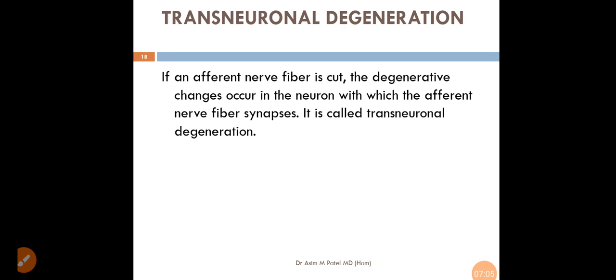The next thing is about transneuronal degeneration. If an afferent nerve fiber is cut, the degenerative changes occur in the neuron with which the afferent nerve fiber synapses. It is called transneuronal degeneration. This is about the various types of degeneration. Thank you.